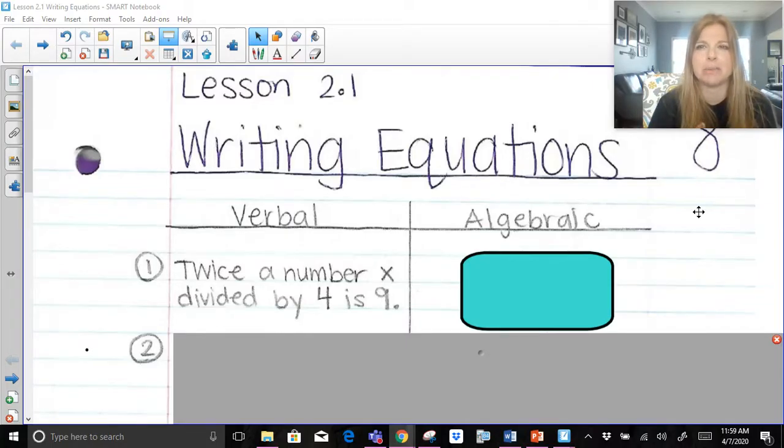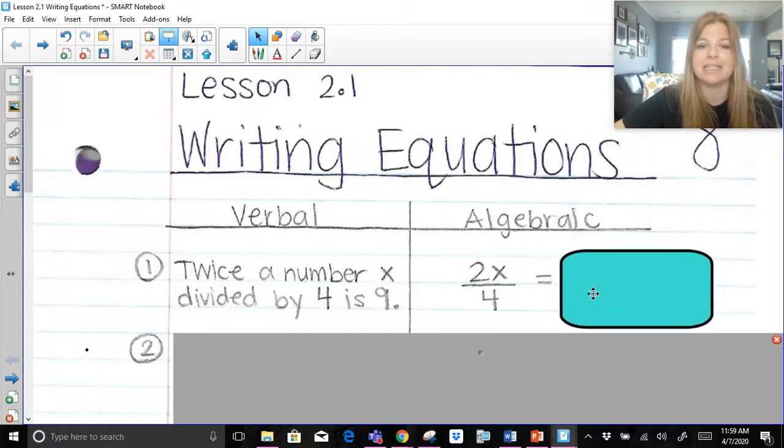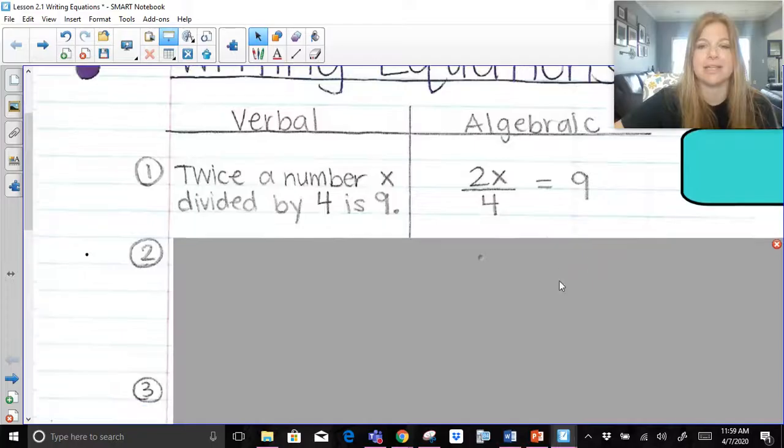Is. What mathematical symbol do you think is? It's the equal sign. So let's take a look. This would look like twice a number x divided by 4 is 9. Okay, let's try the next one.